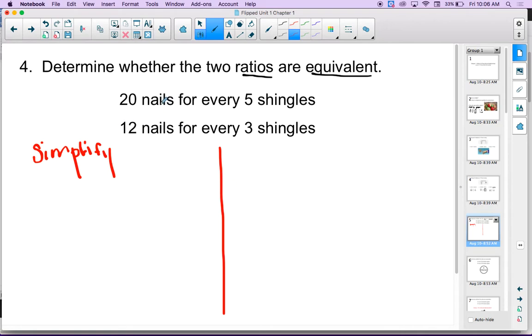So, if we take our first ratio, 20 nails for every 5 shingles, that's 20 nails to 5 shingles. I can simplify that by dividing by the GCF of both numbers, which is 5. And that gets me the simplified ratio, 4 to 1. The next ratio is 12 nails for every 3 shingles. I'm going to simplify that as well. GCF of those two numbers is 3. That also gets me the ratio 4 to 1. So, by this method, we can say yes. Those two ratios are definitely equivalent. That is method 1, the simplify method.